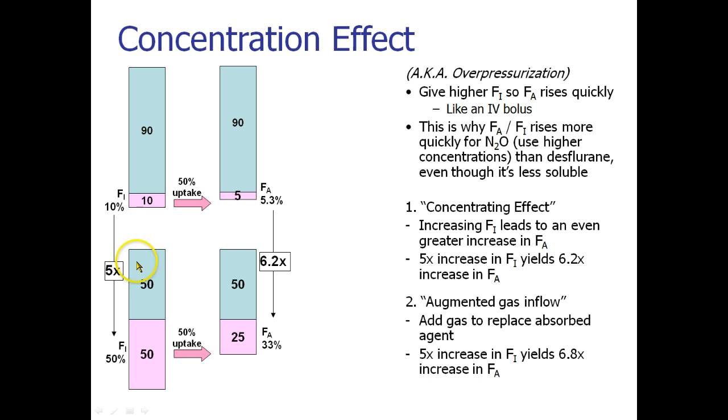Originally, we had 50% agent compared to 10% agent. It's five times as much agent. Now we've gone, this went up to 5.3%. And this is at 33%. It's 6.2 times as much agent in the lungs. And then fresh gas flow comes in. It replenishes the gas deficit because some gas went into the blood. We replenish that, and we replenish it with something that up here, it's 90% gas and 10%, 90% oxygen and 10% agent. So to replenish this little bit, let's say 4.5 parts of oxygen and half a part of agent. And when we add those in, so now we have 5.5% agent and 94.5% oxygen for a total of 5.5%.